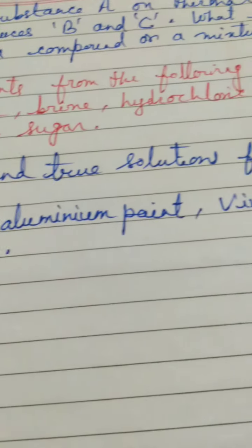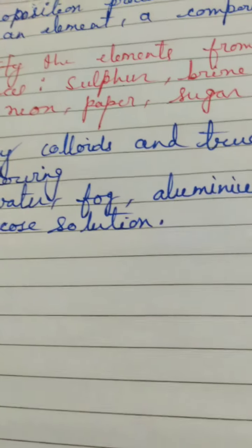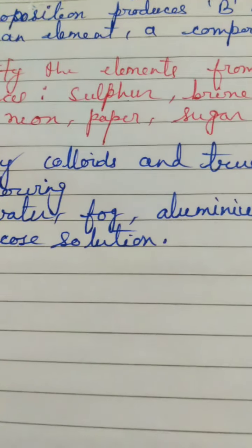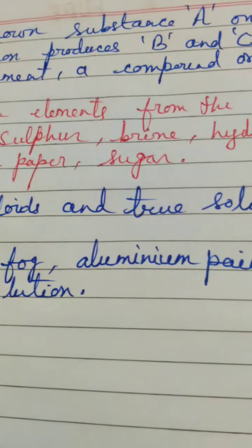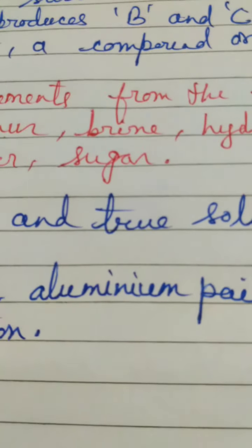Now, identify the element from the following substances. Sulfur will be an element, definitely. Sulfur is an element. A symbol is S. Brine looks like bromine. Don't get confused. Brine is nothing but a mixture, a highly concentrated mixture of water and salt. It is called brine.